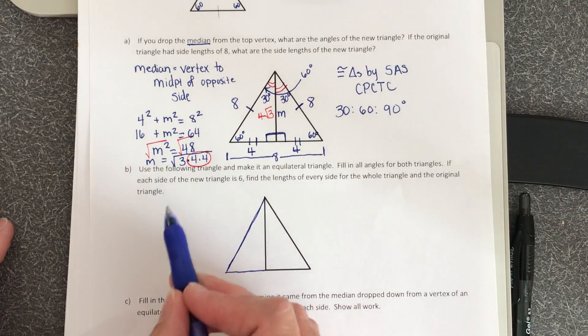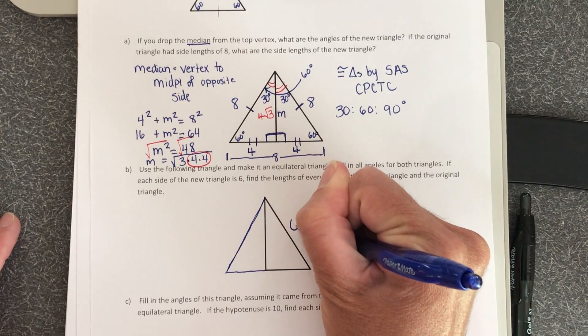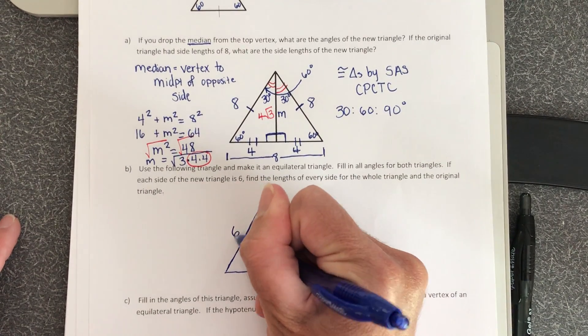So it says each side of the new triangle is now 6. So this side length is 6.